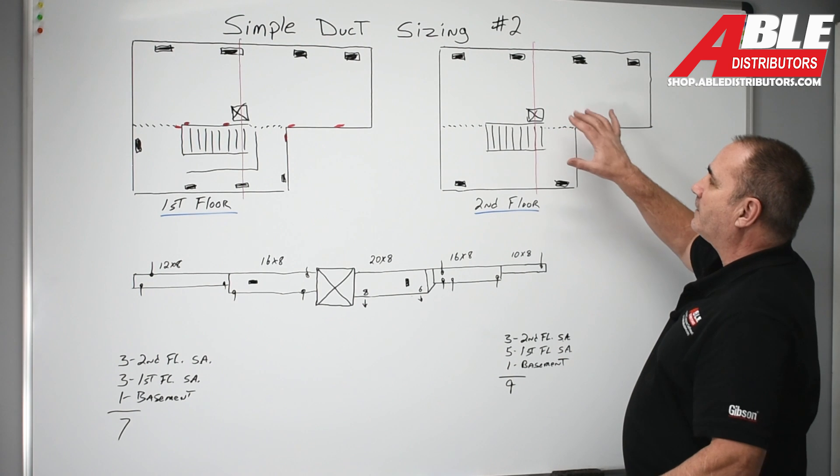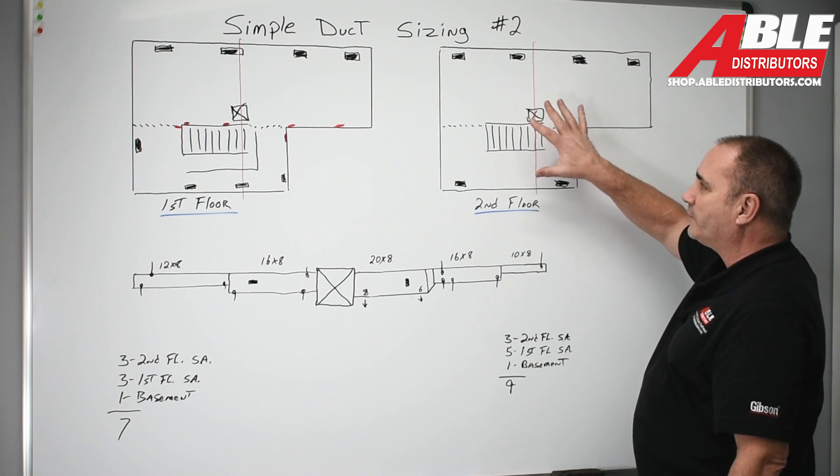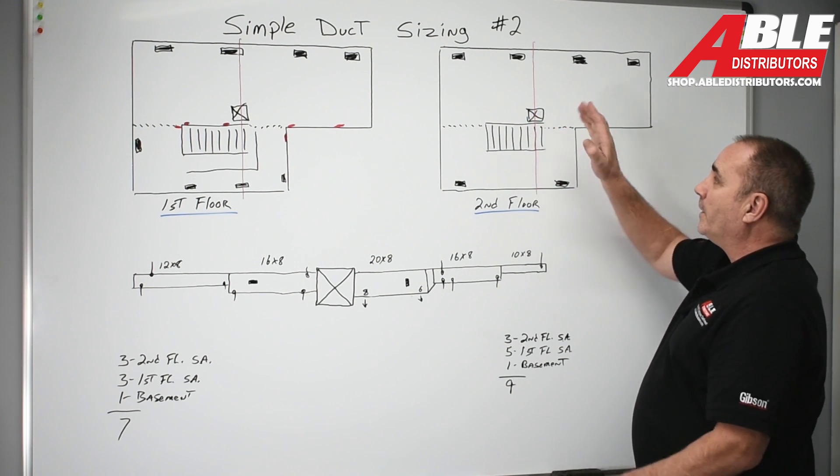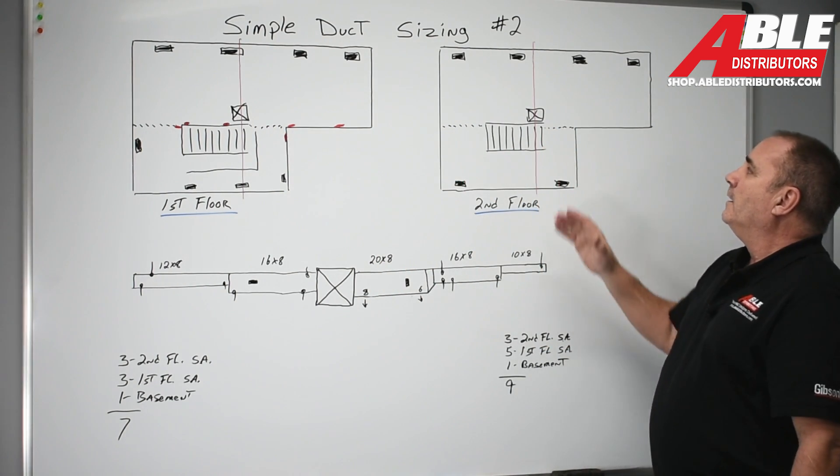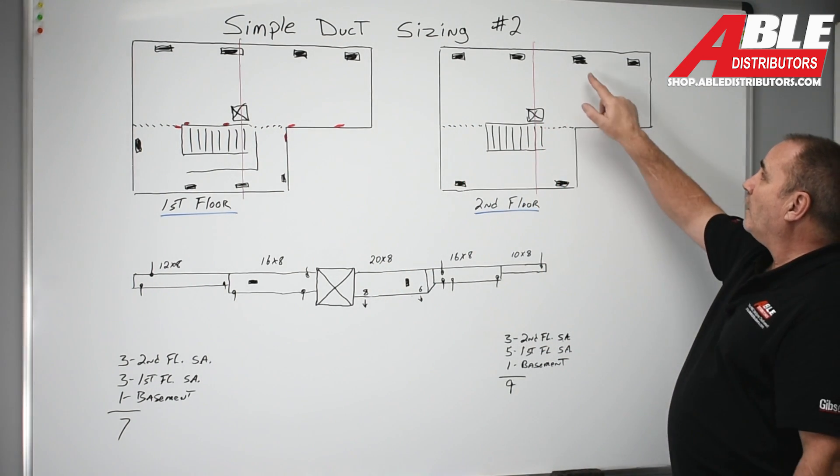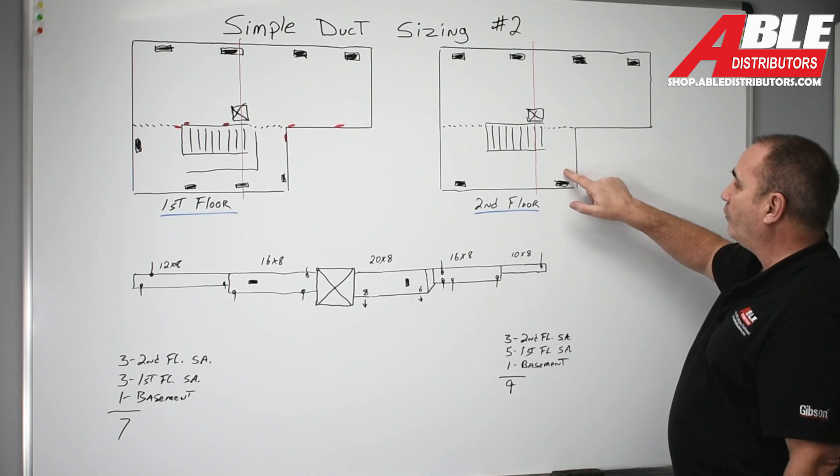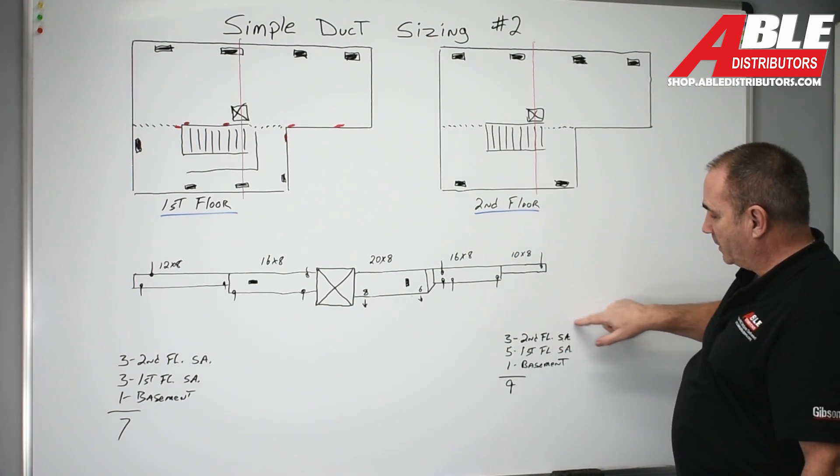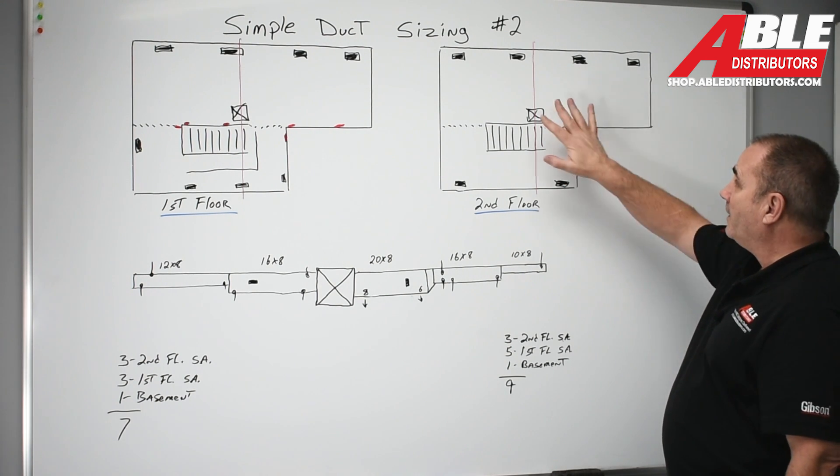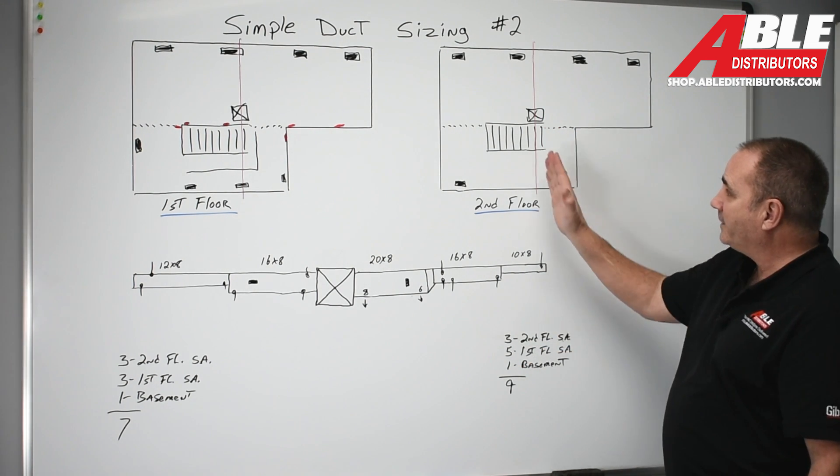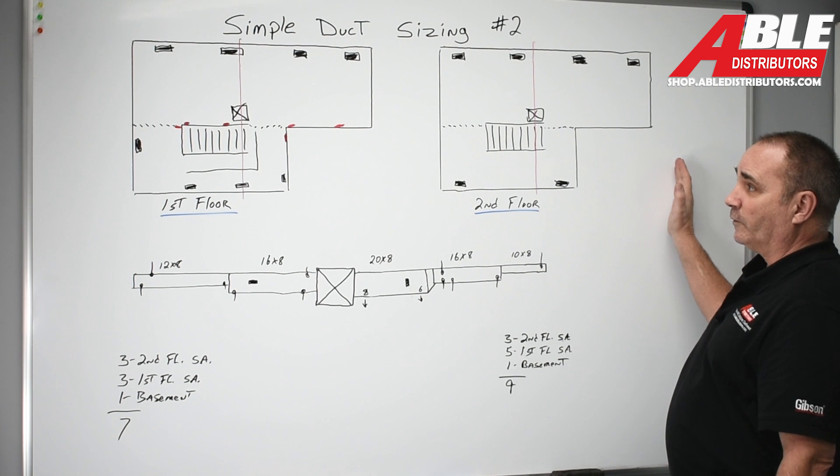Second floor I do the same exact thing. I draw the furnace. No, the furnace is not going to sit on the second floor but I know that's where it's going to sit in the basement just past the stairwell. So now I know on the second floor I've got one, two, three - three second floor supplies. I'm going to put one in the basement on this half of the basement. That gives me a total of nine supplies to the right of that furnace.